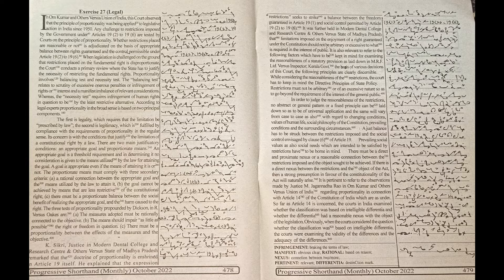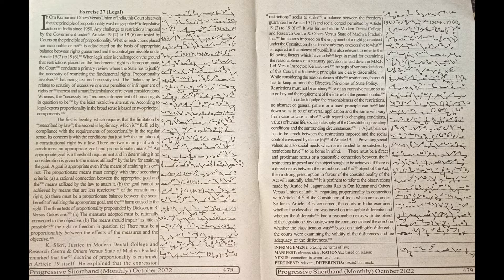The balancing test relates to scrutiny of excessive, onerous penalties or infringement of rights or interests and a manifest imbalance of relevant considerations, whereas the necessity test requires infringement of human rights in question to be by the least restrictive alternative.